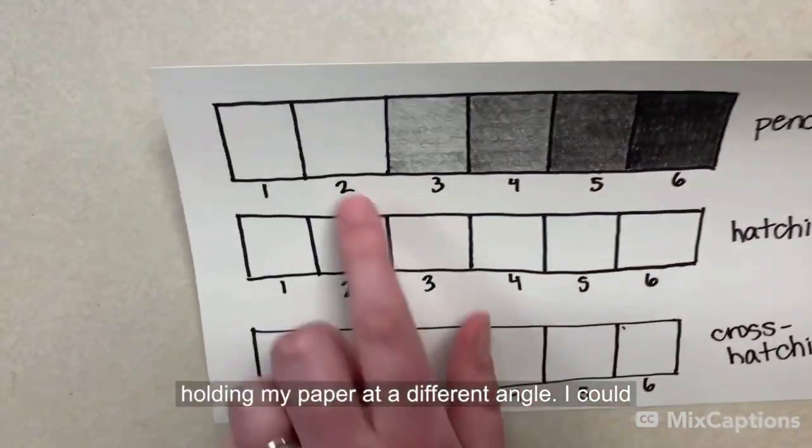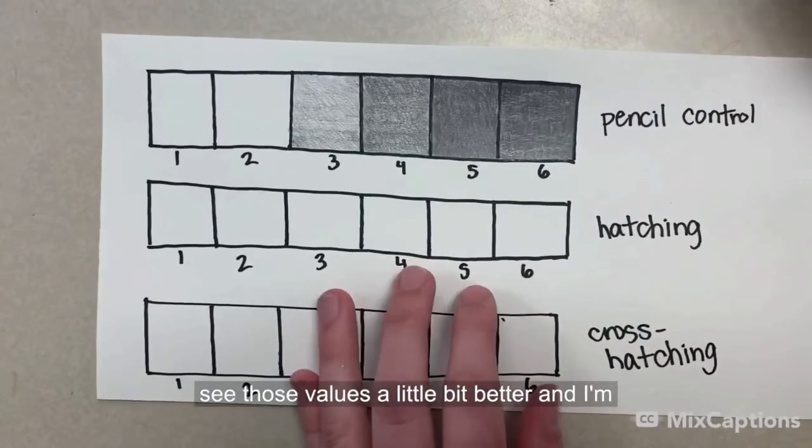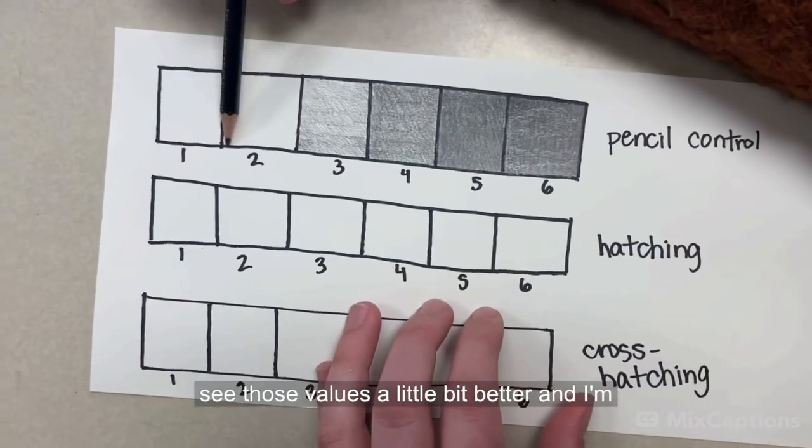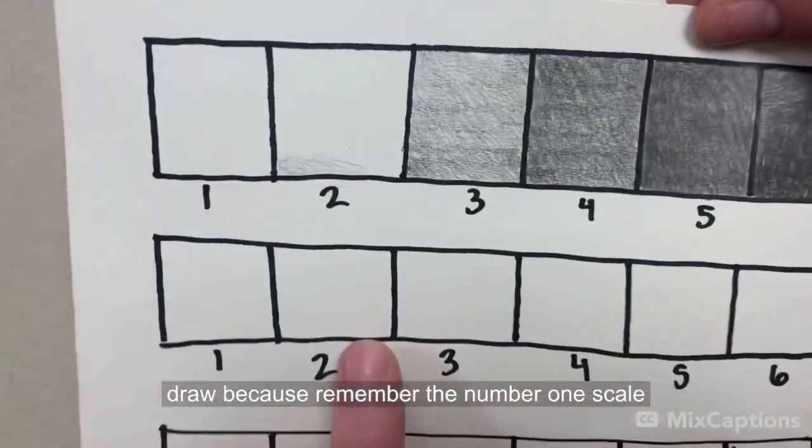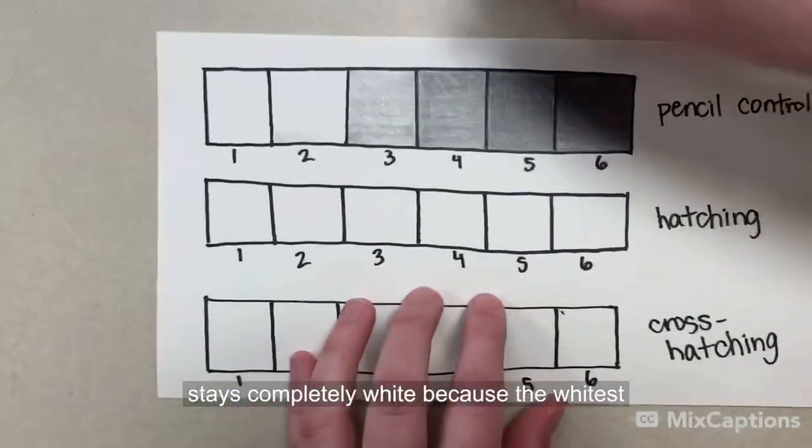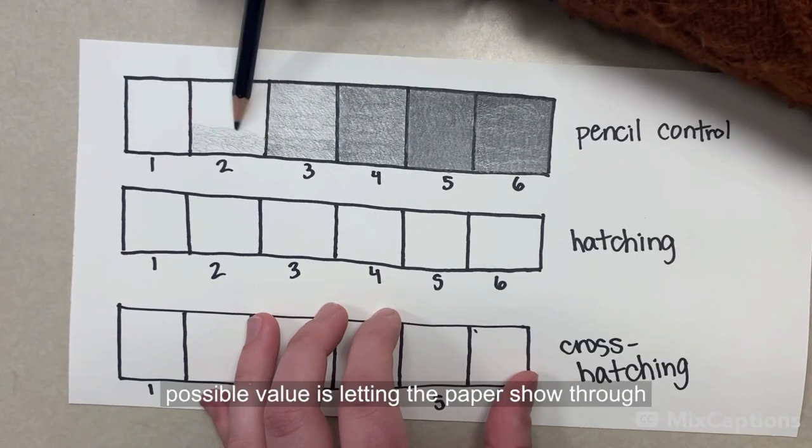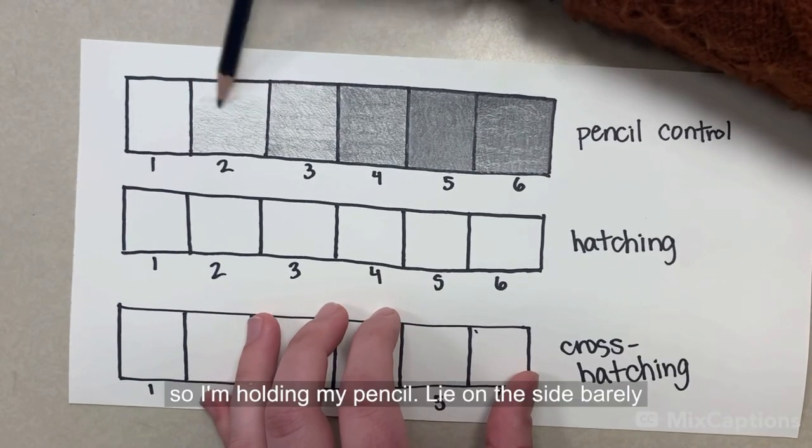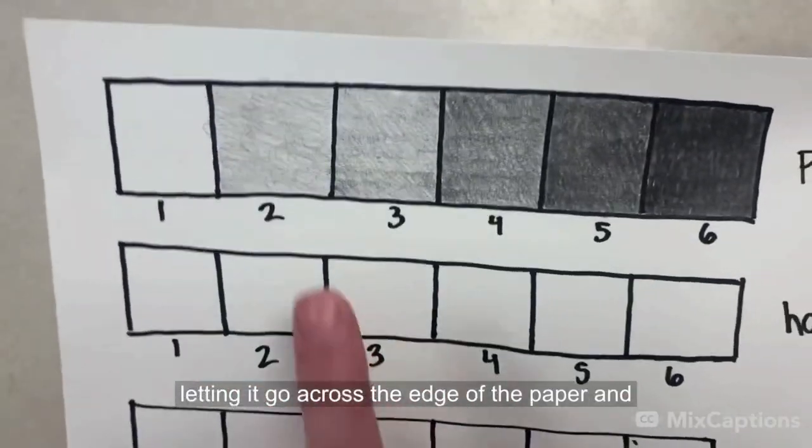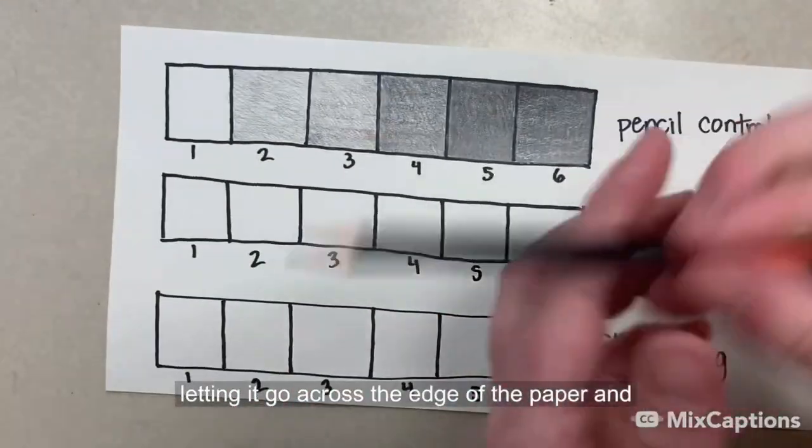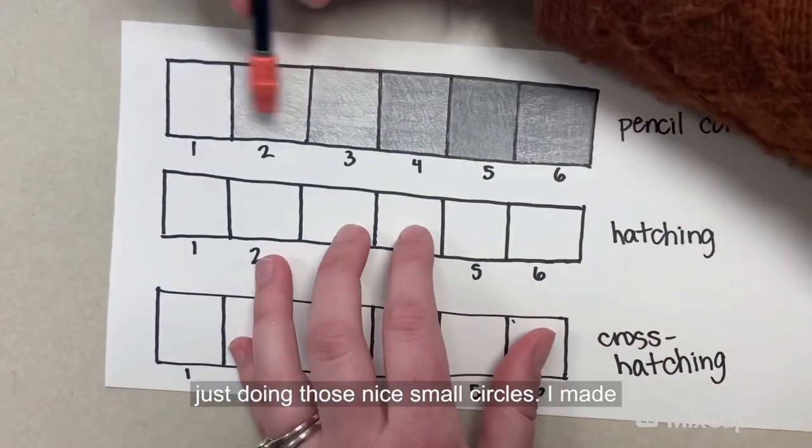So by holding my paper at a different angle, I could see those values a little bit better. And I'm ready to move on to the final one I'm going to draw. Because remember, the number one scale stays completely white, because the whitest possible value is letting the paper show through. So I'm holding my pencil exactly on the side, barely letting it go across the edge of the paper, and just doing those nice small circles.